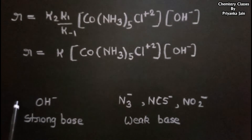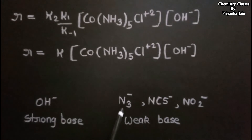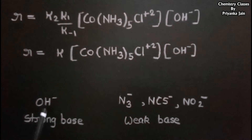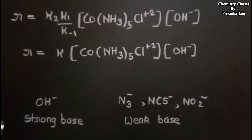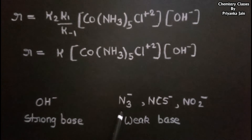Why does the rate depend on OH⁻ concentration and not on N₃⁻, NCS⁻, or NO₂⁻ concentration? Although all have similar nucleophilic strength, OH⁻ is a very strong base while the others are weak bases. Weak bases cannot abstract a proton from the ammonia or water ligand, but OH⁻ can. Since the first step — proton abstraction — is essential for this mechanism to proceed, only a strong base like OH⁻ can drive the SN1CB mechanism. The reaction cannot proceed by SN1CB with these weak bases.